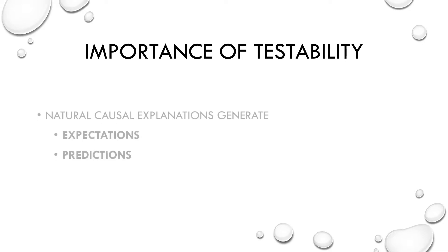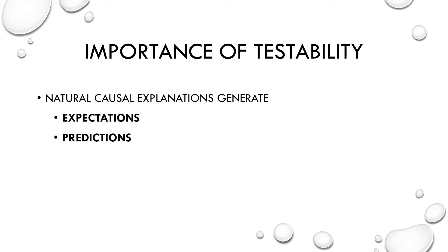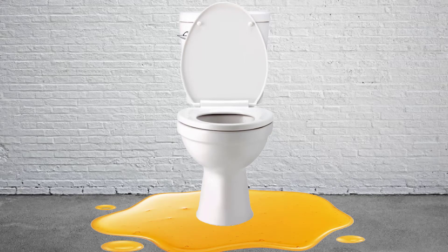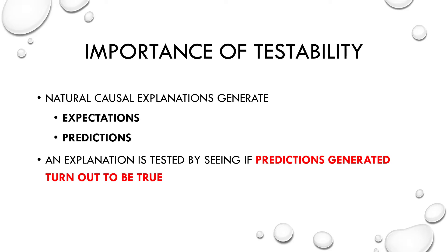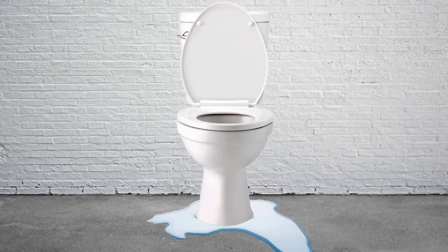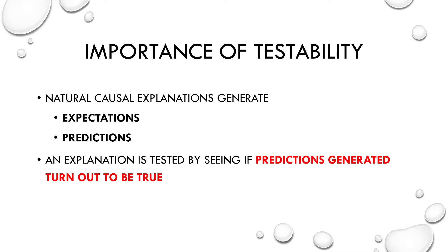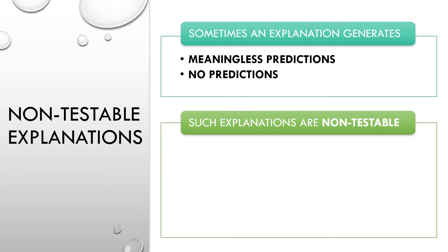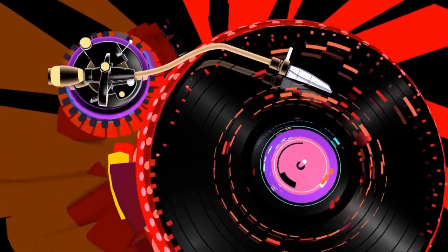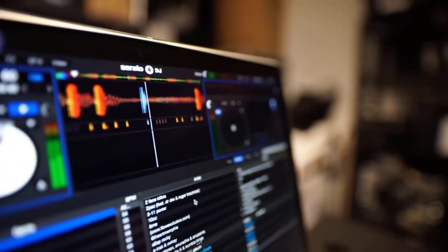Which brings us to testability. Natural causal explanations generate expectations and predictions. If a leaking toilet explains the water on the floor, you expect the water to be cold, and you expect the floor to remain dry if you fix the leak. We test an explanation by seeing if the predictions generated turn out to be true. If you fix the leak and another puddle appears, your first explanation probably wasn't correct. This is an example of what we call falsification. Sometimes an explanation generates meaningless predictions or even no predictions — we call these non-testable. For example, 'people listen to that song because it gives off good vibes' — we don't have any apparatus to measure vibes, so there's no way to test the prediction because the prediction is actually meaningless.